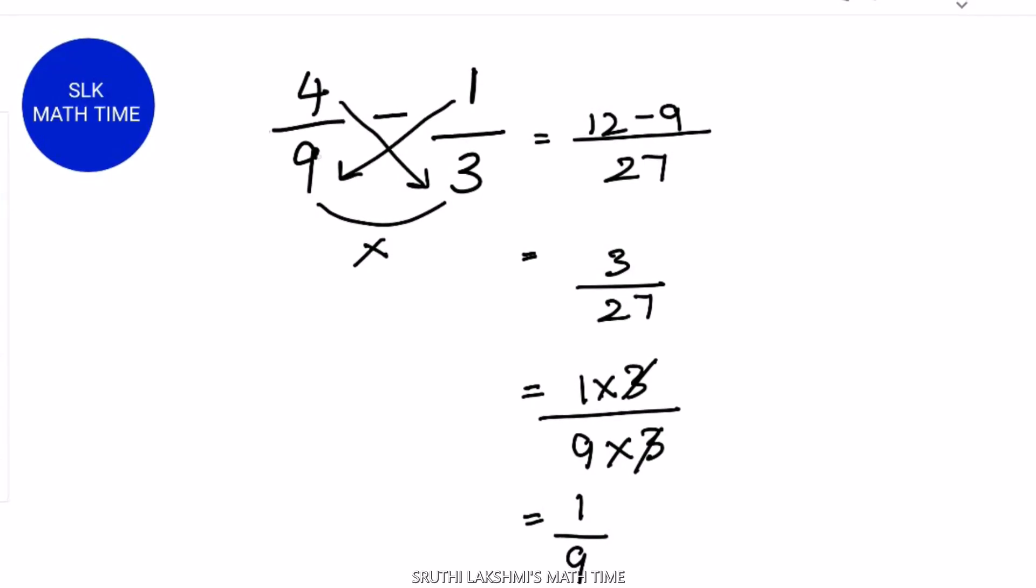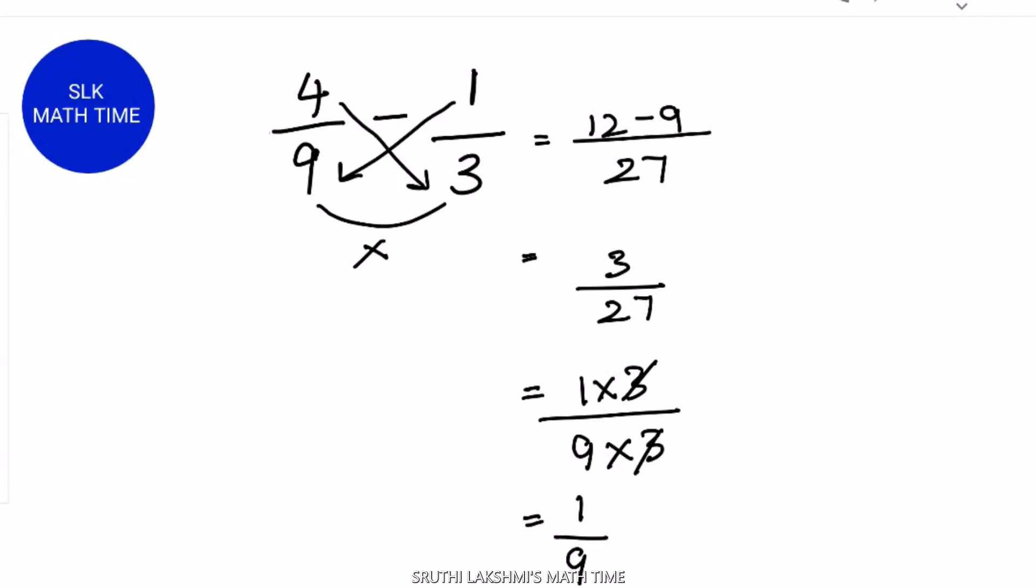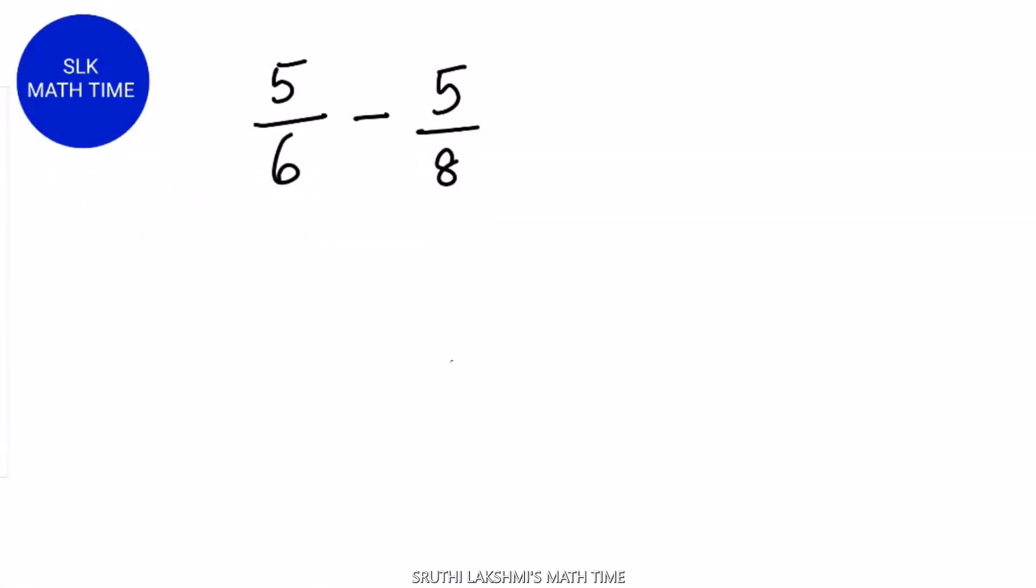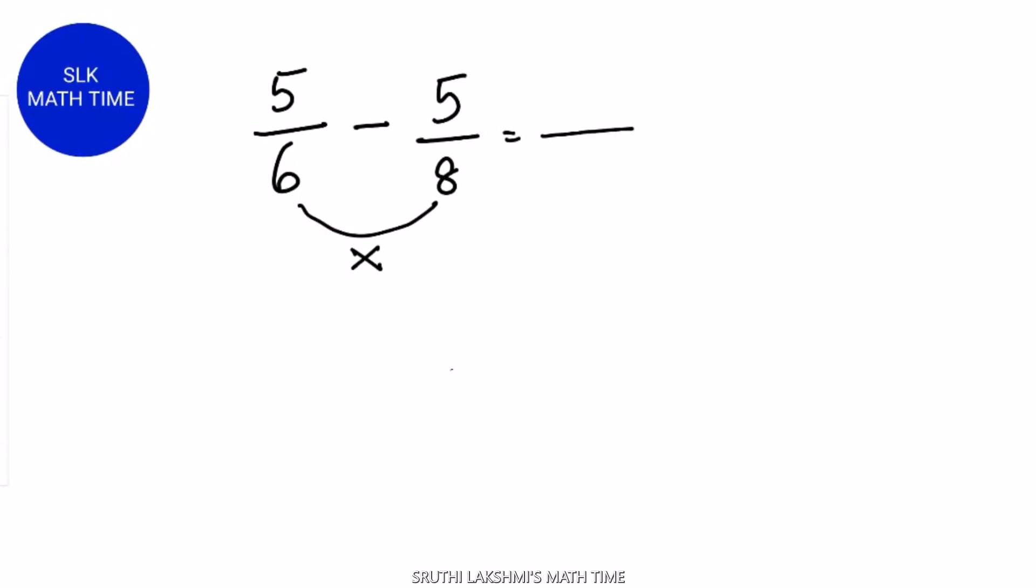So 4 by 9 minus 1 by 3 is 1 by 9. Let's see another example: 5 by 6 minus 5 by 8. First, multiply the denominators. 6 into 8 is nothing but 48.